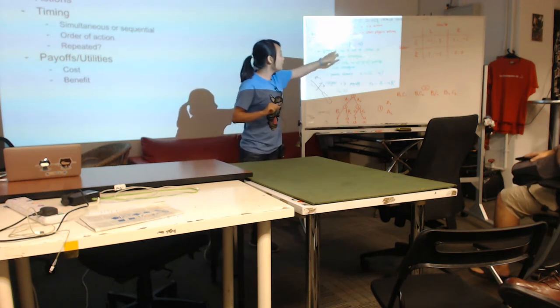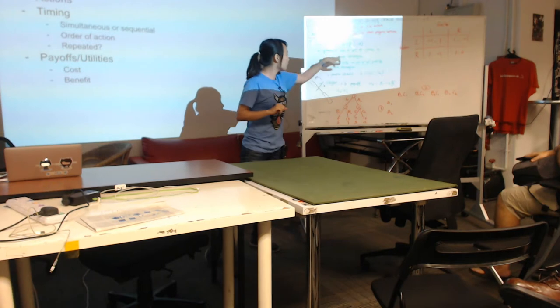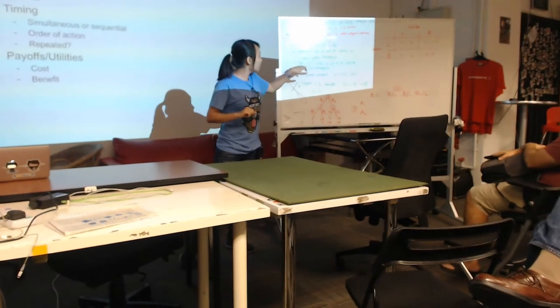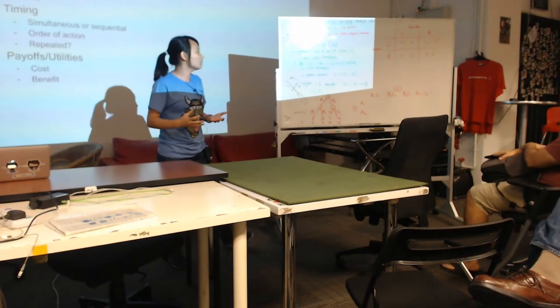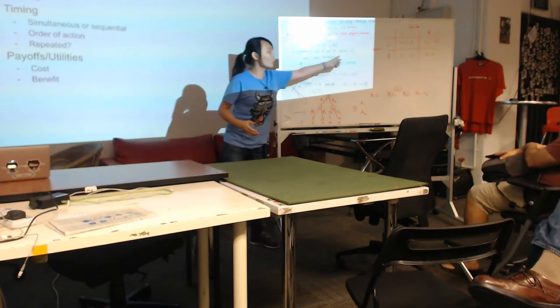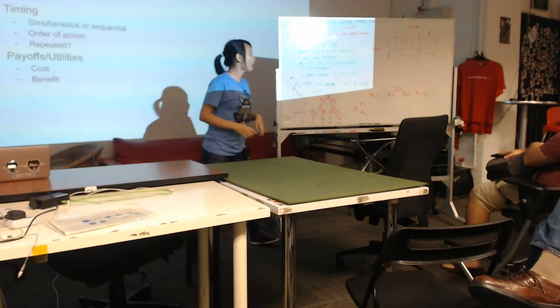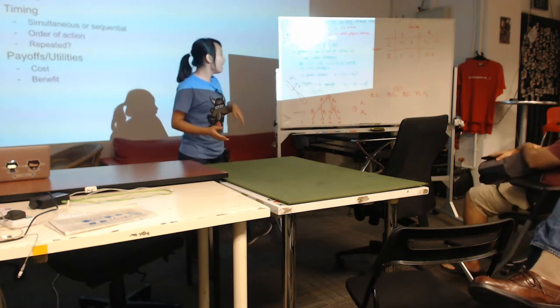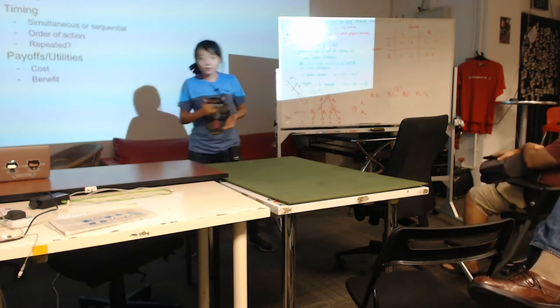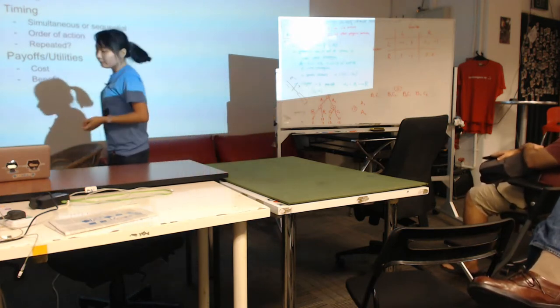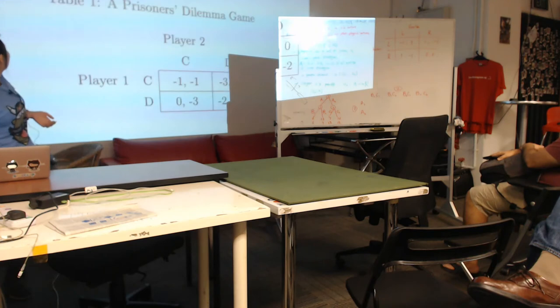Player i, one of these players, has a set of actions which is represented normally by Ai. This is also called pure strategies, which brings me to the next point.